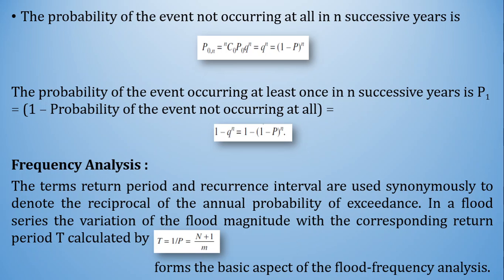The probability of the event not occurring at all in n successive years is P₀ₙ, since r = 0. This equals nC₀ · P⁰ · q^n = (1 − P)^n. The probability of the event occurring at least once in n successive years is 1 minus the probability of non-occurrence: 1 − q^n = 1 − (1 − P)^n.